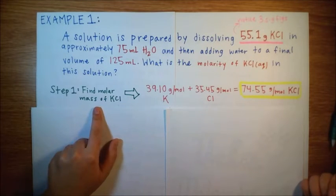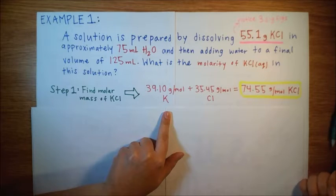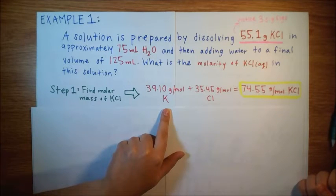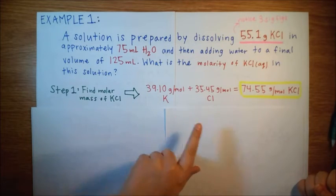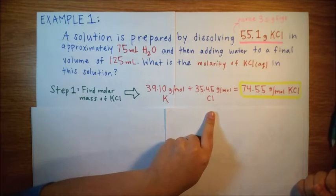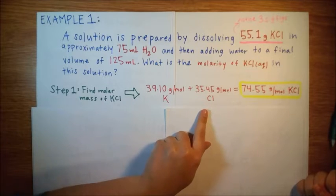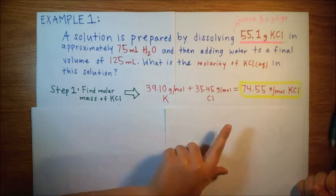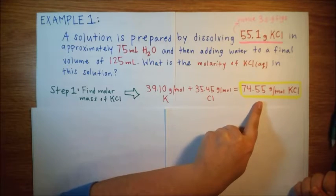First, we need to find the molar mass of potassium chloride. We know from the periodic table that in one mole of potassium, there are 39.1 grams, and in one mole of chlorine, there are 35.45 grams. So we basically just add these together to get a molar mass of potassium chloride is 74.55 grams.